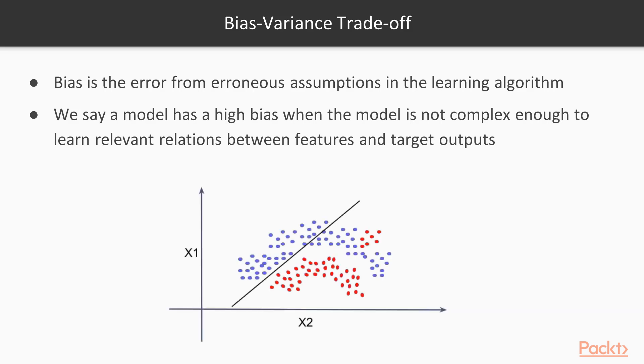For example, in this graph we have two classes, red and blue, and we are trying to capture the relation between these two classes with the help of a straight line. As we can see from the diagram, the relation between the two classes is not linear, and such a case is said to have a high bias.